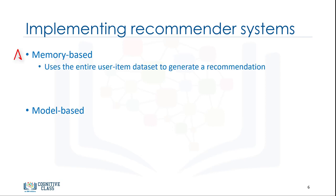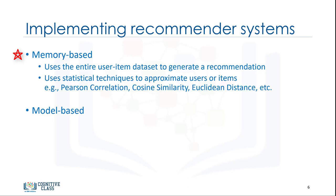In memory-based approaches, we use the entire user item dataset to generate a recommendation system. It uses statistical techniques to approximate users or items. Examples of these techniques include Pearson correlation, cosine similarity, and Euclidean distance, among others.